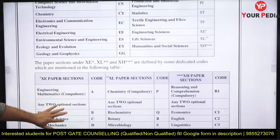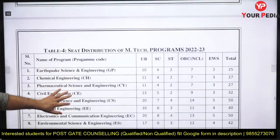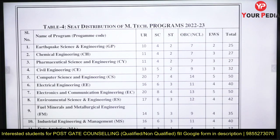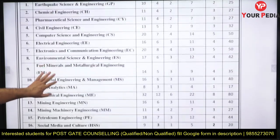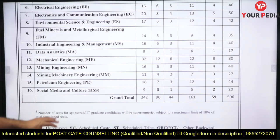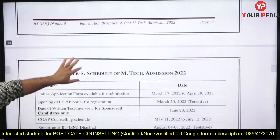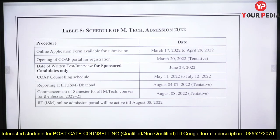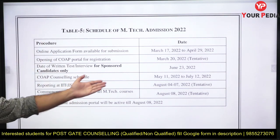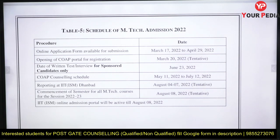IIT ISM Dhanbad has also mentioned the meaning of the codes and the various domains where you can apply. Keep ISM Dhanbad as one of your options. M-Tech seats are also listed on the form. From 17th March, applications open; 29th April is the last date. The COAP portal for registration will tentatively open on 20th March — we will inform you. Counseling starts from May 11th onward, continuing for two months. The session tentatively starts on 8th August.